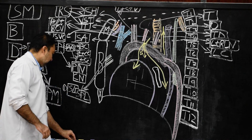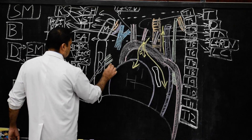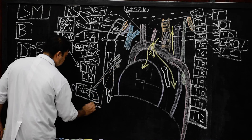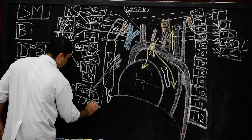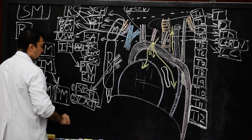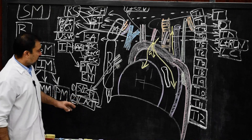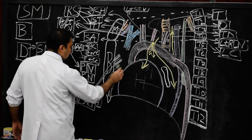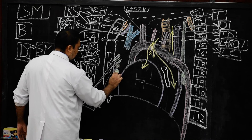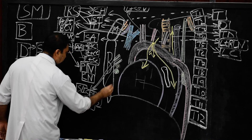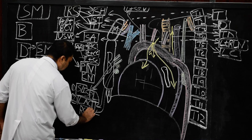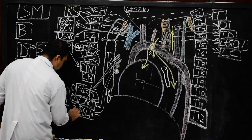Structure number two is loose areolar connective tissue. We mark this structure as loose areolar connective tissue because these are asked as MCQs. Structure number three will be known as the retrosternal lymph node, marked as structure number three.